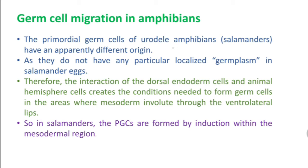However, in case of urodele amphibians — that is, salamanders — germ cell migration is somewhat different. They have an apparently different origin, as there is no particular localized germplasm in the salamander egg; there is no specific location of germplasm in urodele amphibians.